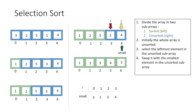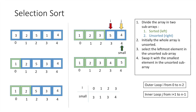If we observe, throughout the process we were using two loops with i and j, where i is the outer loop running from 0 to n-2 (where n is the size of the array), and j is the inner loop running from i+1 to n-1.